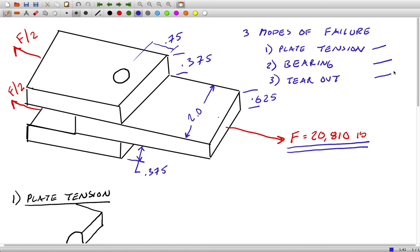In each one of these we've got the middle plate here is 0.625 inches and it's loaded with the full force. The outer plates are 0.375 inches and are loaded with half the force because it has to split between the two.